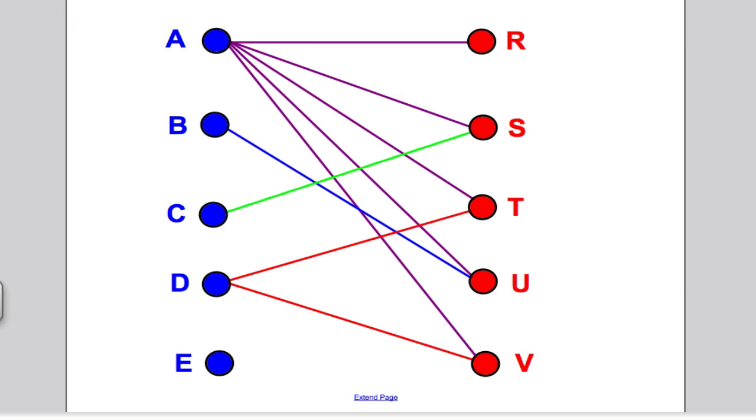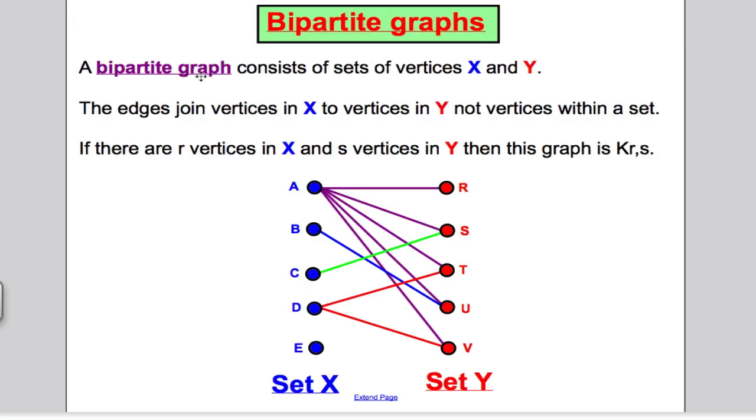Let's pull it together with a formal definition. A bipartite graph consists of sets of vertices X and Y. The set of boys here, we're going to call set X. The set of girls, we're going to call set Y. The edges must join vertices in X to vertices in Y and not within the set. If there are R vertices in X and S vertices in Y, we call the graph K subscript RS. In this case, we've got five boys and five girls. This graph we would call K55, because there are five boys in set X and five girls in set Y. That's what a bipartite graph means. You need to know that definition in the exam.